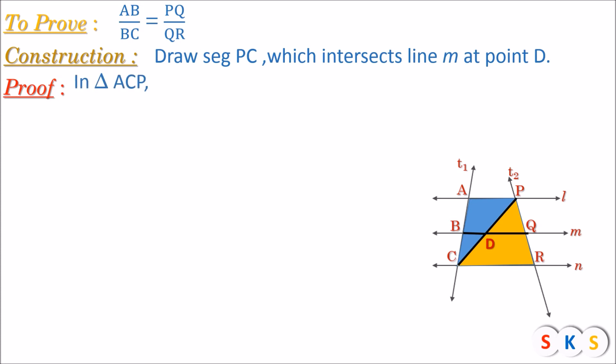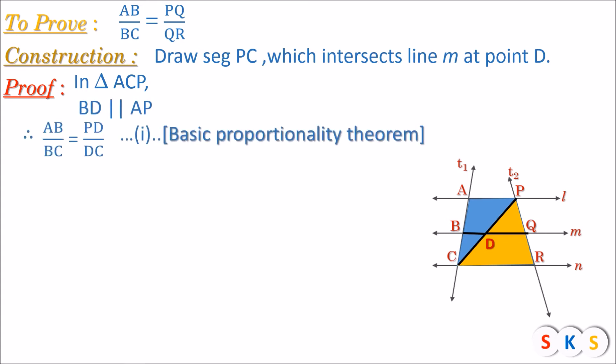Let's take triangle ACP first. In this triangle, Seg BD is parallel to Seg AP. Do you know why? Because line L and line M are parallel to each other. So I can apply the Basic Proportionality Theorem here, and we get AB upon BC equals PD upon DC. We will consider this as equation number 1.